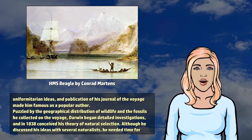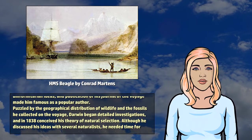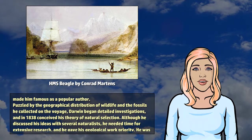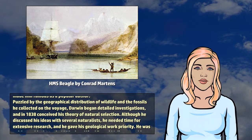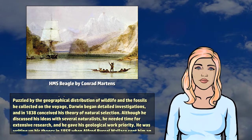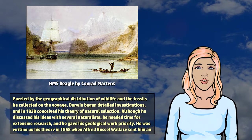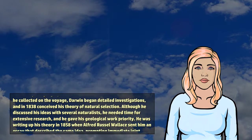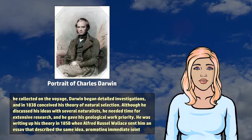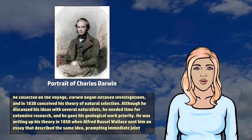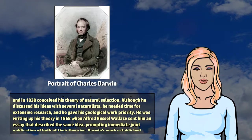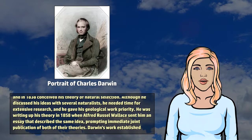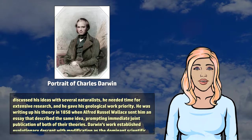Puzzled by the geographical distribution of wildlife and the fossils he collected on the voyage, Darwin began detailed investigations, and in 1838 conceived his theory of natural selection. Although he discussed his ideas with several naturalists, he needed time for extensive research, and he gave his geological work priority.